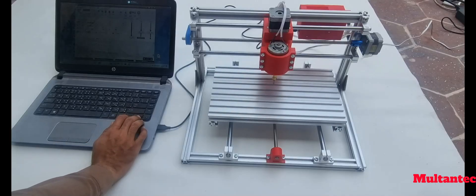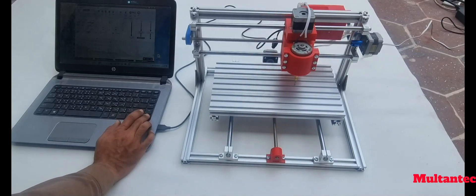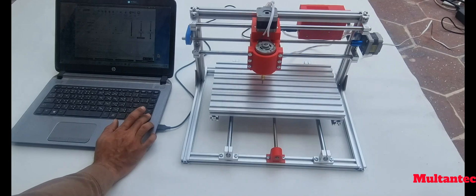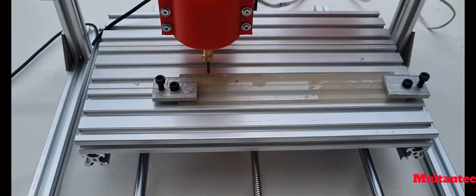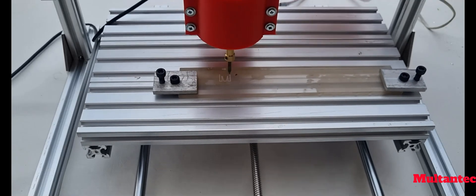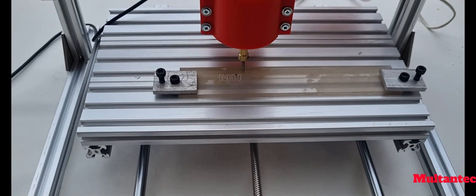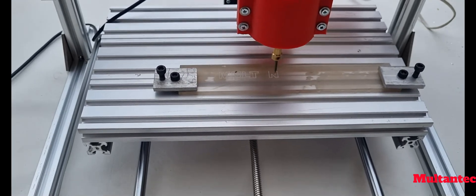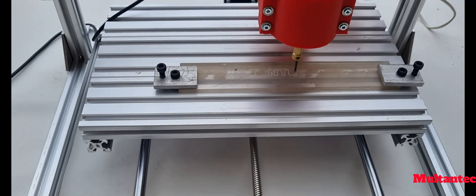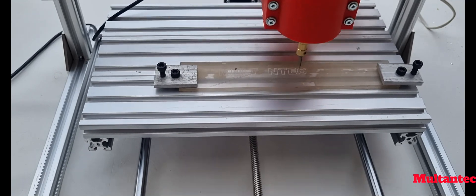Check the movement of all the axes after calibration. Now let's start our first cut. I am using the open build controller to control the machine and Vectric Aspire to make G-code. I made this copy of Chinese CNC-3018 with minimum cost and easily available parts.